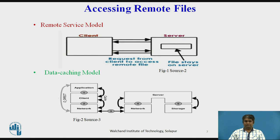In the data caching model, the goal is to reduce the amount of network traffic by taking advantage of locality features found in file access. If the data needed to satisfy a client access request is not present locally, it is copied from the server node to the client node and cached there. The client request is then processed on the client node itself using the cached data. Recently accessed data is retained in the cache for some time so that repeated access of the same data can be handled locally. The diagram shows the model for data caching.